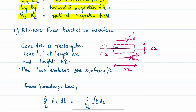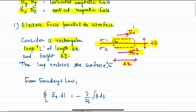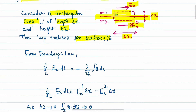Now consider the first case where the electric field is parallel to the interface. We have to find how the electric field behaves parallel to the interface. Ex1 is the electric field parallel to the interface in the upper surface. Consider a rectangle loop L — this is our rectangle loop — with length delta-x and height delta-z.